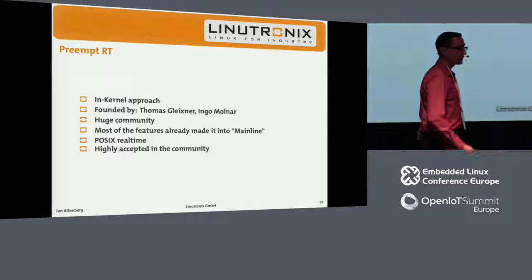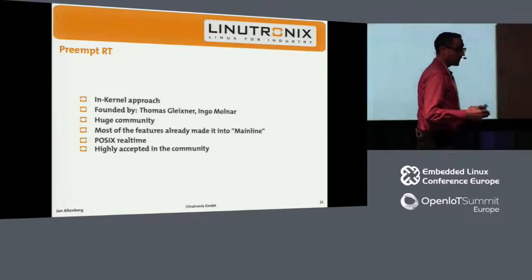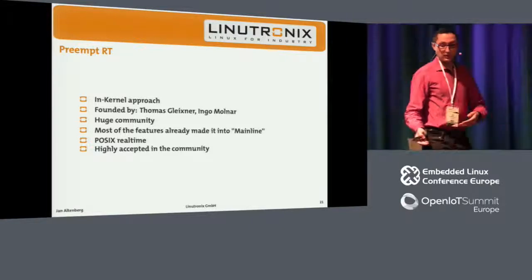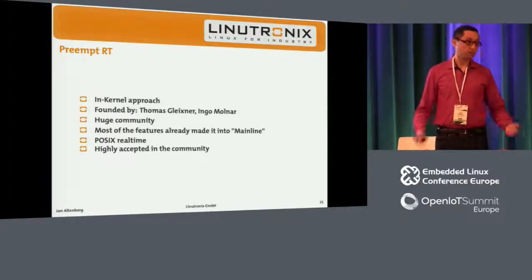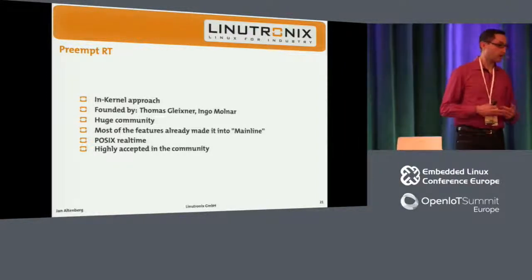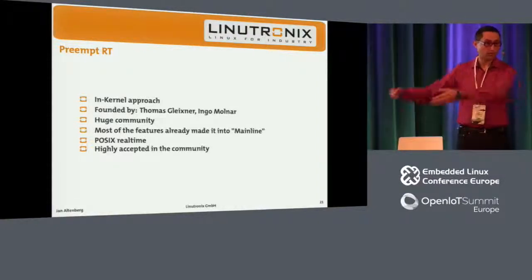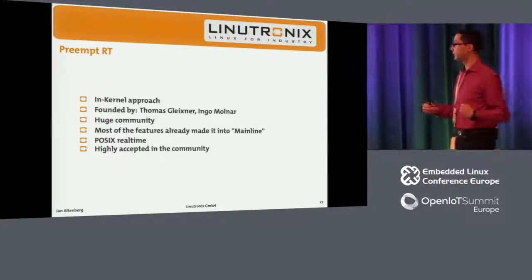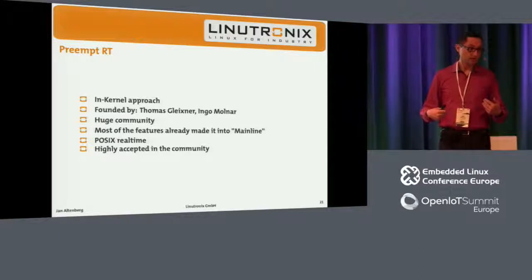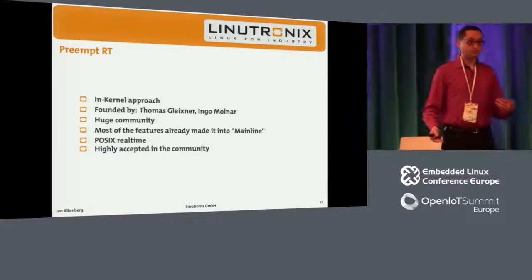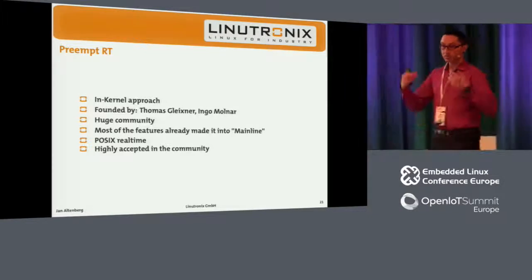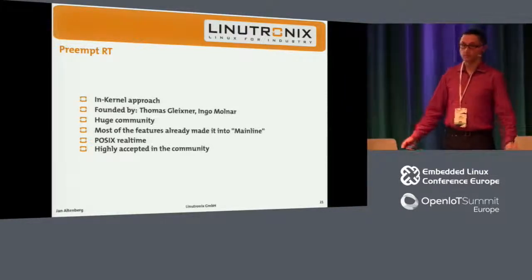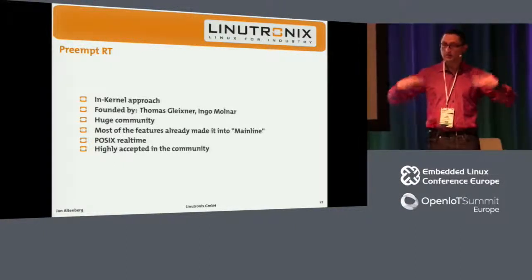We also have a high acceptance in the community for the real-time preemption patch. Basically, we added some powerful features which are not just useful for real-time users — they are useful for everyone. These guys made Linux a better operating system for all other users as well, and this got them a lot of acceptance in the community. Also, when they made Linux real-time and everything got preemptible, they found a lot of race conditions and locking problems, fixed these, and pushed them back into mainline. This improved the stability of Linux a lot. They're not just focused on their own work — they get more quality into Linux.